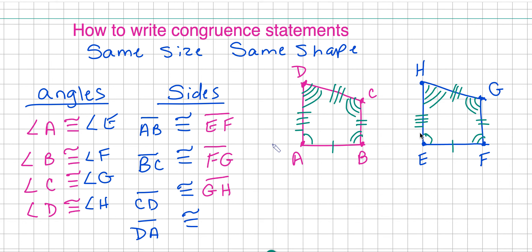Finally, we have DA. This has four congruent marks, so we're going to look for the four congruent marks. D starts it, so I'm looking for the angle with four arcs — that gives us line segment HE. So DA is congruent to HE, and that's how we write congruency statements.